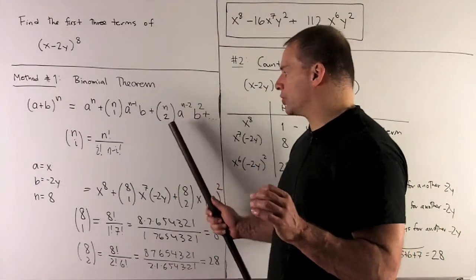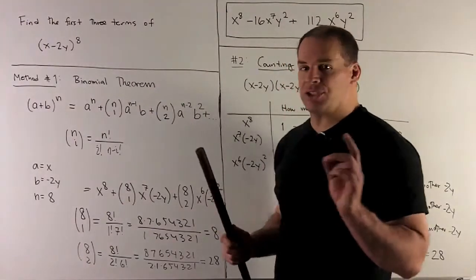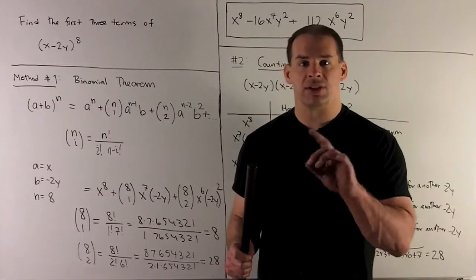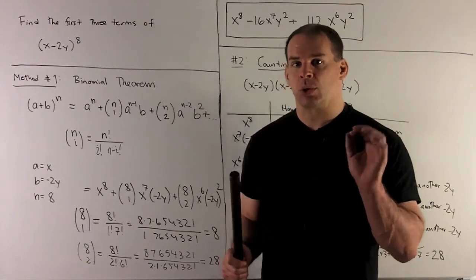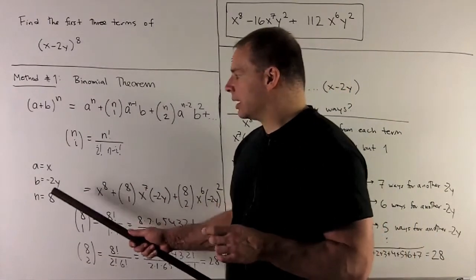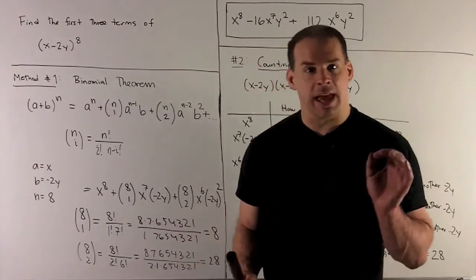Then I have n choose 2, a^(n-2) times b^2, and so on. Now, in our special case, we're looking at a equals x, b equals minus 2y, n equals 8.